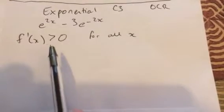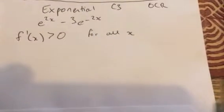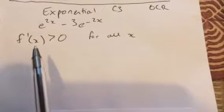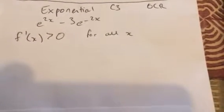We've got e to the 2x minus 3e to the minus 2x, and we've got to show that its derivative, f dash x, is greater than zero for all x.